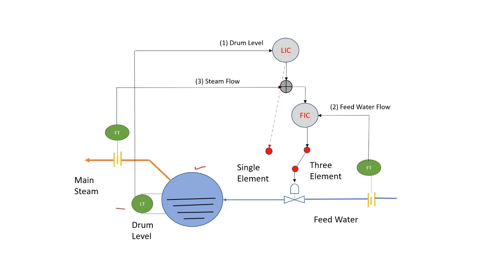Maintaining level of the drum is our primary concern. The output of this level transmitter goes to a level controller, and this level controller in turn sends signal to the feed water valve.